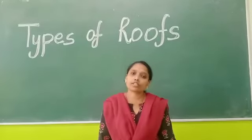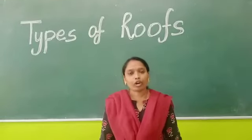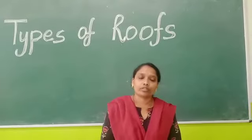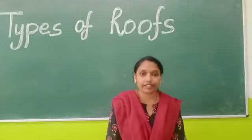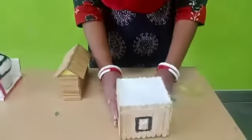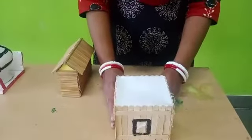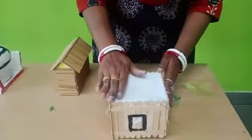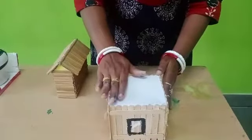The first roof is called a flat or plain roof. Houses that are constructed in plain or dry areas have a flat or plain surface.